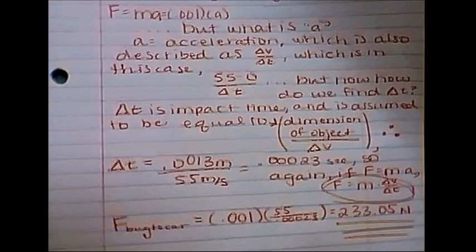In this situation, it's assumed to be equal to the dimension of the object over delta v. Now the dimension of this object in this case is Buggy, and he is .0013 meters long. And so if we put that equal to the delta t, we have .0013 meters over 55 meters per second. The meters cancel out and gives us .00023 seconds.